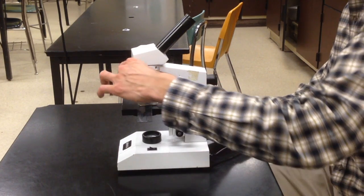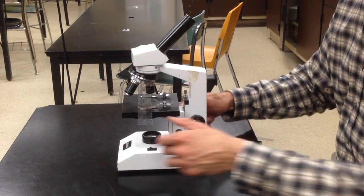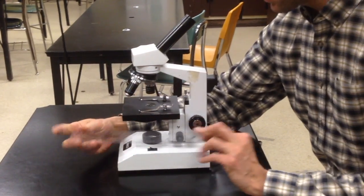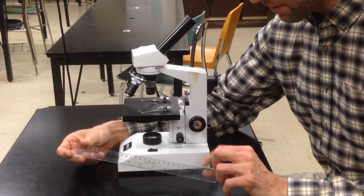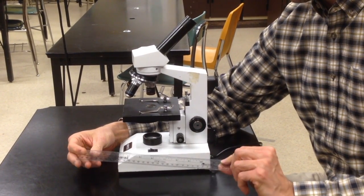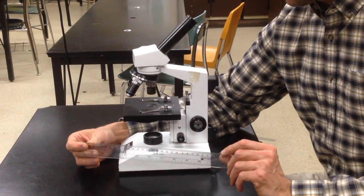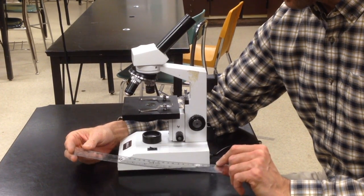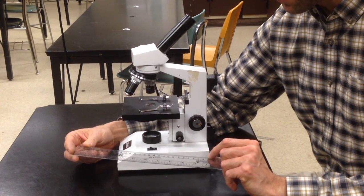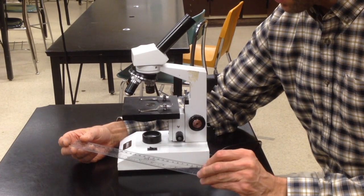Let's take a look at how to measure the diameter of the field of view under a microscope. The first thing that you're going to need is a ruler. This ruler has a metric side and a standard side. The metric side has centimeters and the tiny lines are millimeters, and then the standard side of course is inches.